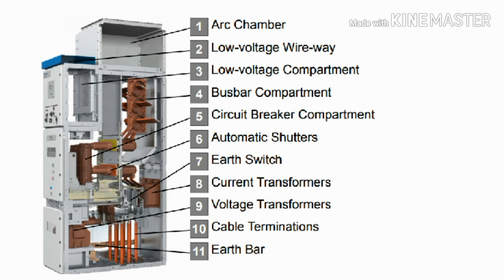Third is the low voltage compartment on the front side of the switchgear panel at the top. Here we place the protection relays and controlling switches like on and off, ammeters, voltmeters — all these low voltage components are fixed here.